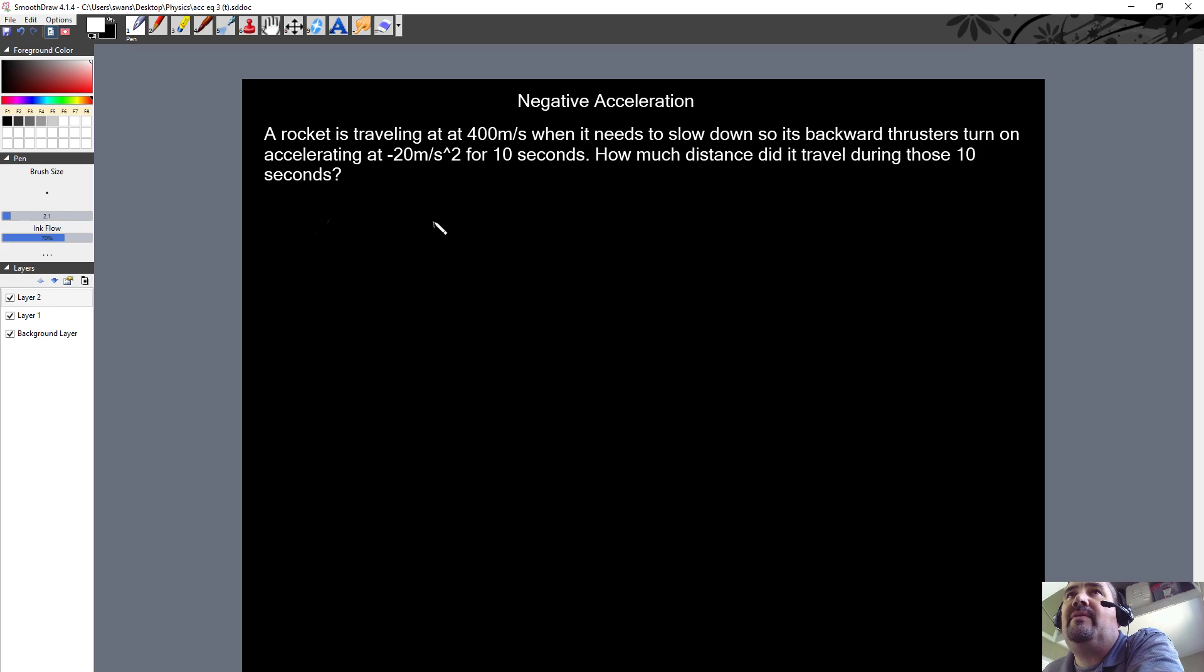So it's already going that speed, 400 meters per second, and it turns its backwards thrusters on to slow down, turning on acceleration at negative 20. Now, there are physics problems where they don't tell you the negative and you have to put the negative on it.